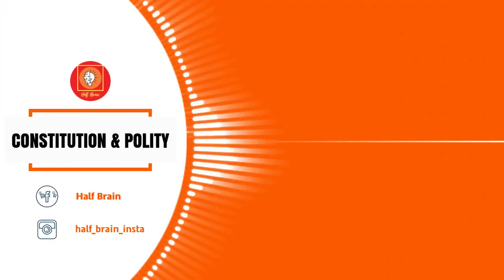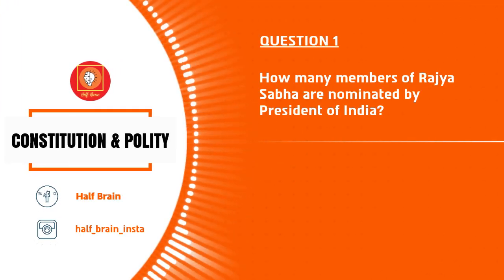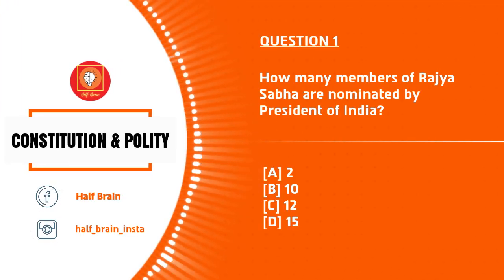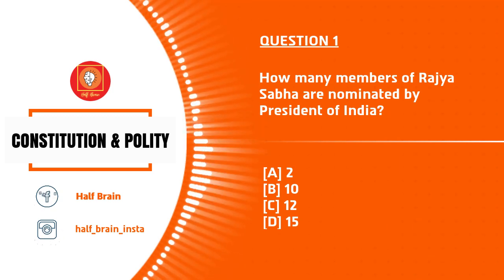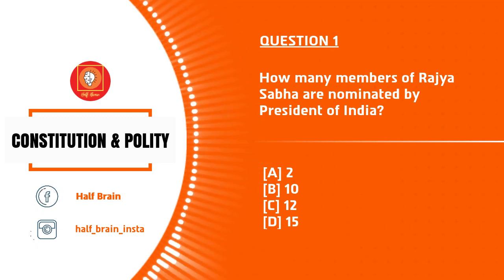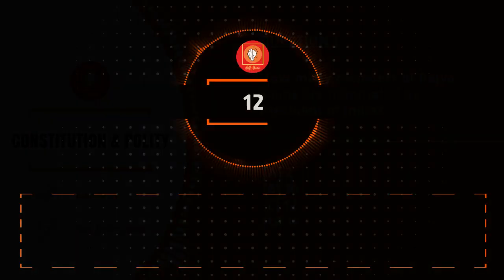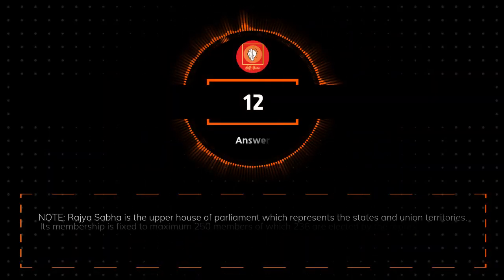First Q&A, brand new series. Question 1: How many members of Rajya Sabha are nominated by the President of India? Our options are 2, 10, 12, and 15. The answer is 12.